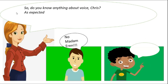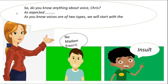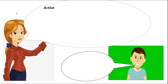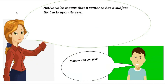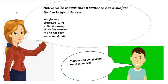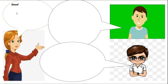So, do you know anything about voice, Chris? No, Madam. As expected. Voices are of two types. We will start with the active voice. Active voice means that a sentence has a subject that acts upon its verb. Madam, can you give me some examples? Yes! He watches a movie. She is playing chess. She has watched the circus. She has been studying for two hours. You understand? Yes, Madam. Good!